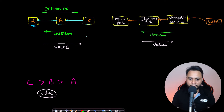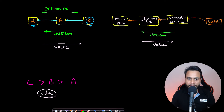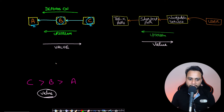Moving right to left is upstream and left to right is downstream. Therefore, the value of C will be highest because it imports all the functionalities of A and B whenever required. The value of B will be less than C but more than A because it imports all the functionalities of A. So in terms of value, it increases from left to right.